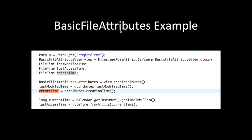Let's take an example of BasicFileAttribute. In this case, I am getting the last access time for a file. We take the help of the Path API, reference t2.txt, and open this file with getFileAttributeView(). Once this view is open, we read all the attributes and get the last modified time and the creation time.